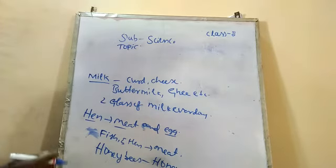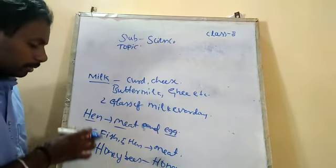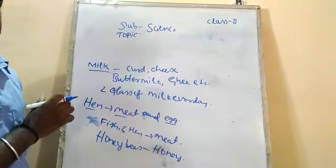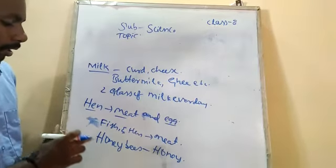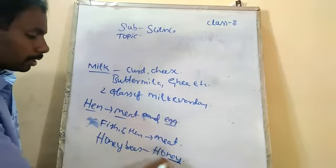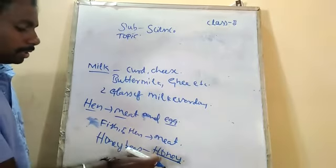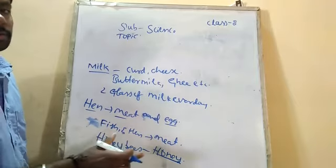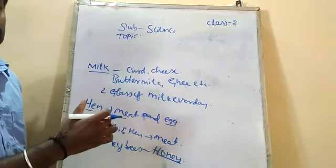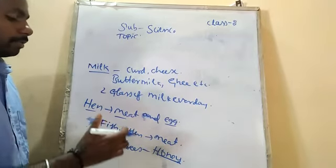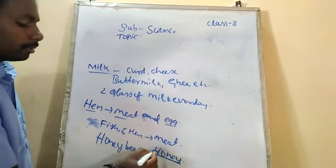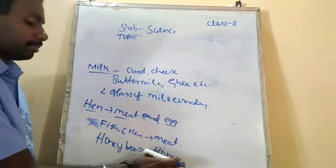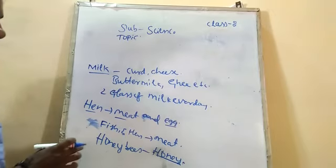The product from honey bees is honey. Honey is sweet in taste and is collected by the honey bees from the flowers. The bees collect nectar from the flowers, and it forms honey. Honey is also good for health and sweet in taste.